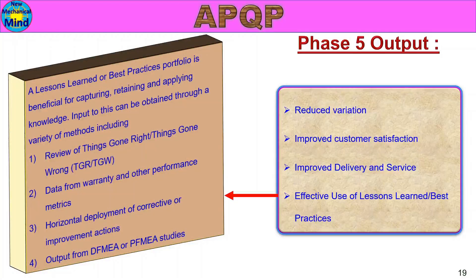Effective Use of Lessons Learned and Best Practices: a lessons learned or best practices portfolio is beneficial for capturing, retaining, and applying knowledge. Input to this can be obtained through a variety of methods including review of things gone right and things gone wrong (TGR and TGW), data from warranty and other performance metrics, horizontal deployment of corrective or improvement actions, and output from DFMEA and PFMEA studies.